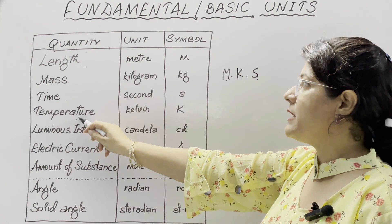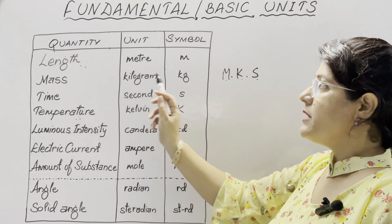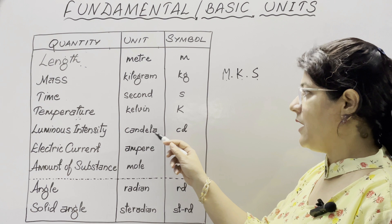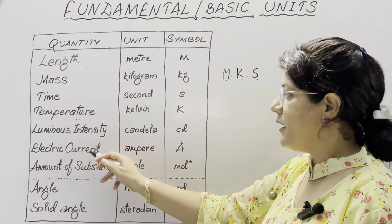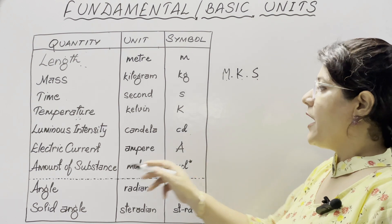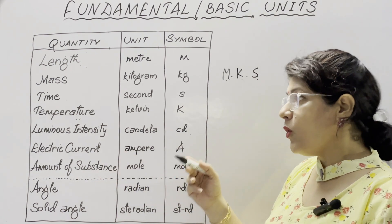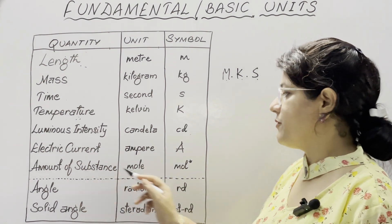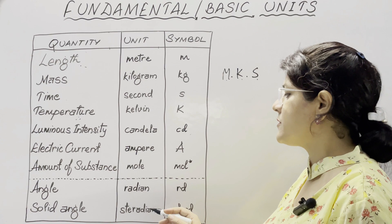Other physical quantities include temperature, whose unit is kelvin. Next is luminous intensity, whose unit is candela, written as cd. Electric current has unit ampere, written as A. Amount of substance has unit mole. Two complementary fundamental units are angle, whose unit is radian, and solid angle, whose unit is steradian.